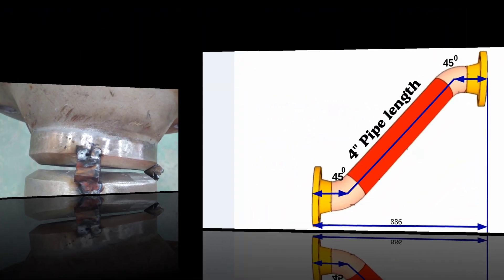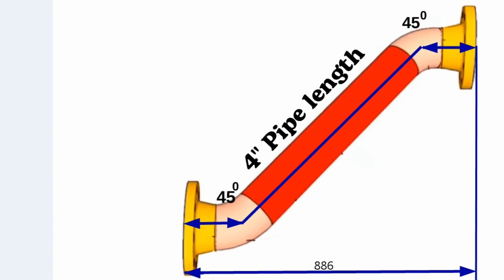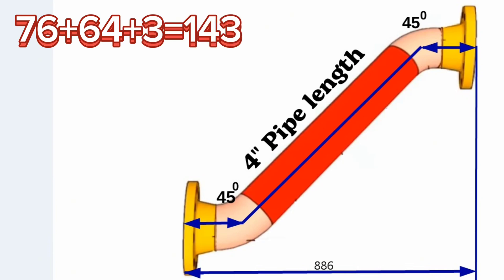Let's start to calculate this total length. 76 millimeters plus 64 millimeters plus 3 millimeters equals 143 millimeters.